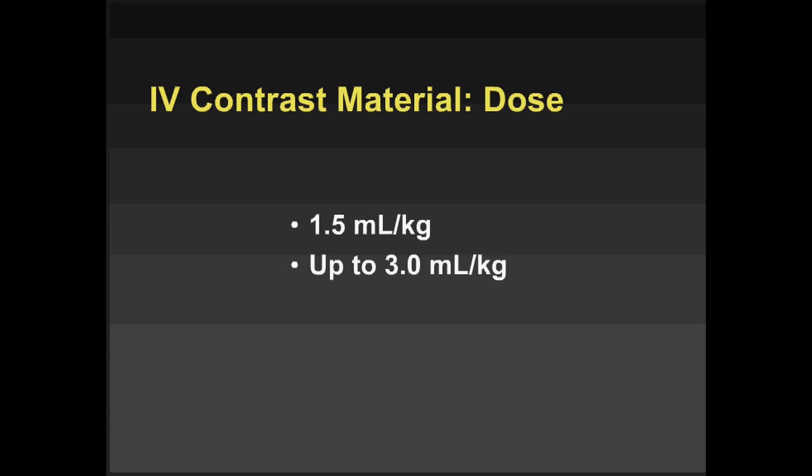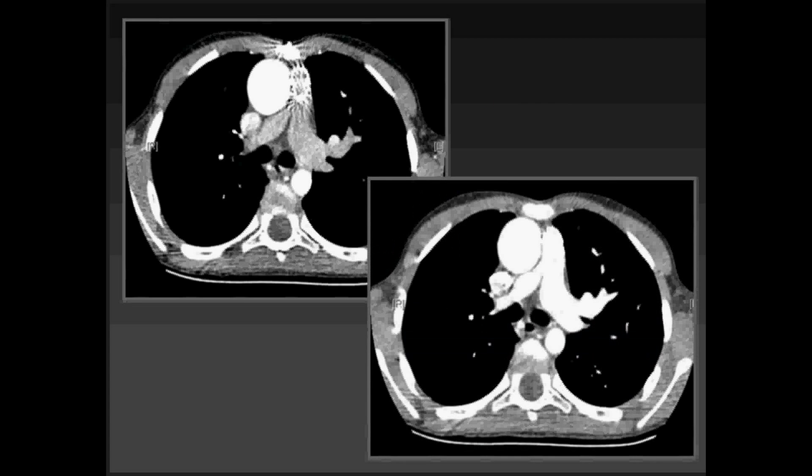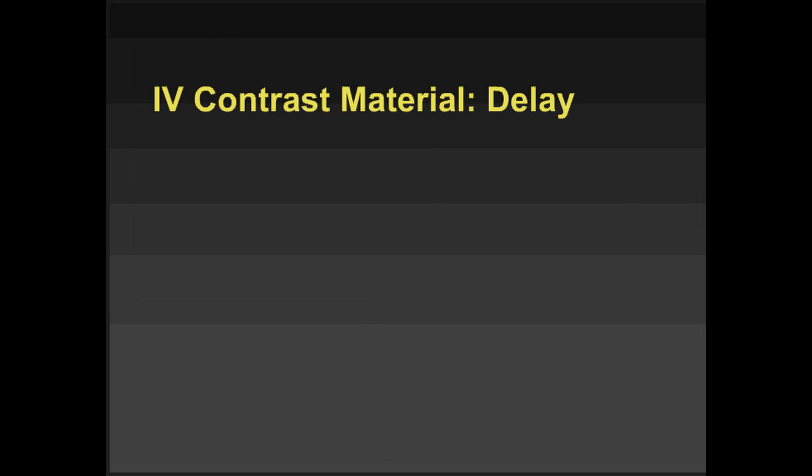Here's an example: we were trying to opacify the pulmonary outflow tract in this child and were a little late. You can see the stent in the MPA up here. We simply gave a second injection, and with better timing, the anatomy was much more elegantly depicted.